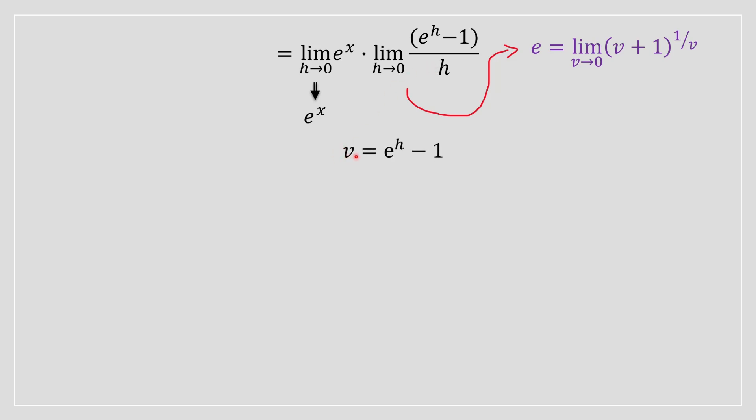We're going to say that v is equal to e to the power of h minus 1. We're doing this so that we can make this limit look somewhat like this limit, and I'll show you in a moment how we do that.